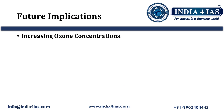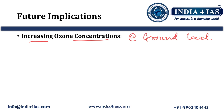Coming to the future implications of ozone pollution: the increasing ozone concentration at the ground level is going to affect the growth of forests, especially tropical forests. This ground-level ozone is going to cause harmful effects on biodiversity — both animals and plants. This is all about how ozone plays a dual role: one role at the stratospheric level and another role at the ground level.